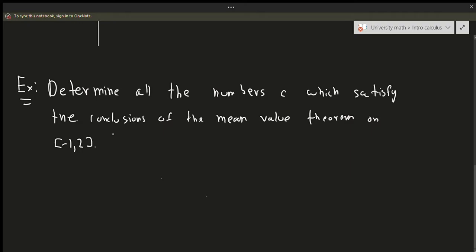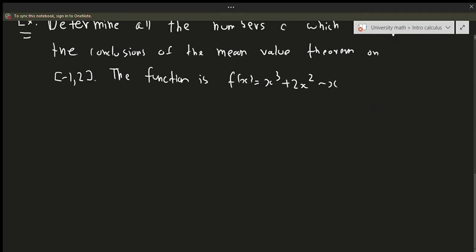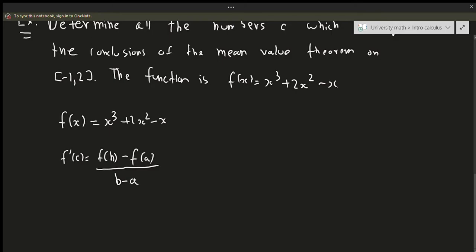Determine all numbers c that satisfy the conclusions of the mean value theorem on the closed interval [-1, 2] for the function f(x) equals x cubed plus 2x squared minus x. How do we do that? Well, we know what the function is. And remember that the mean value theorem says f prime of c equals f(b) minus f(a) over b minus a. We can find f prime of c by taking the derivative: f prime of x equals 3x squared plus 4x minus 1.